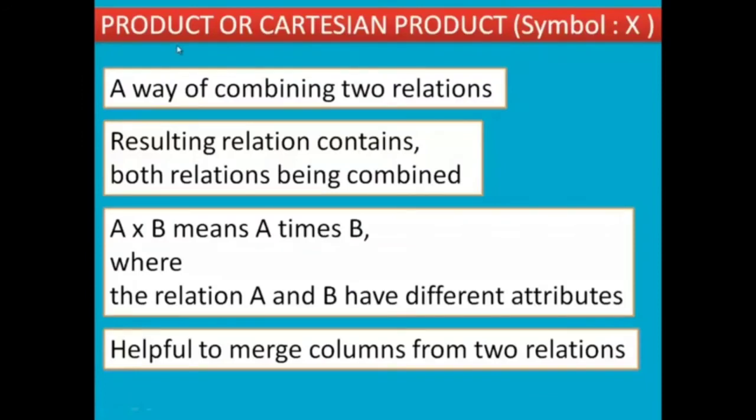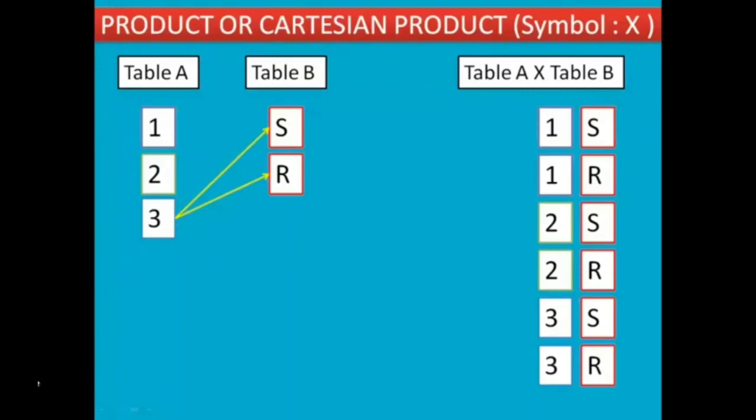Next, PRODUCT or CARTESIAN PRODUCT, symbol is X cross symbol. This is the way of combining two relations. The resulting relation contains tuples from both relations being combined. A cross B means A times B, where relations A and B have different attributes. We can merge columns from two relations as a product of Cartesian product. For example, take table A with values 1, 2, 3 and table B with S and R. Merge them: 1 with S, 1 with R, 2 with S, 2 with R, 3 with S, 3 with R.